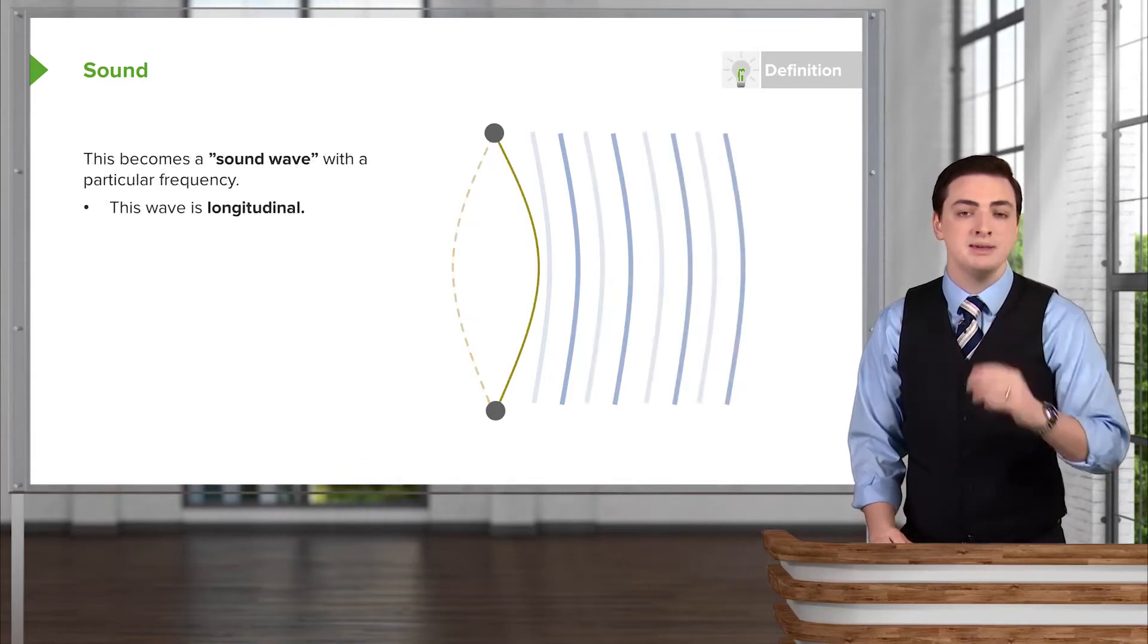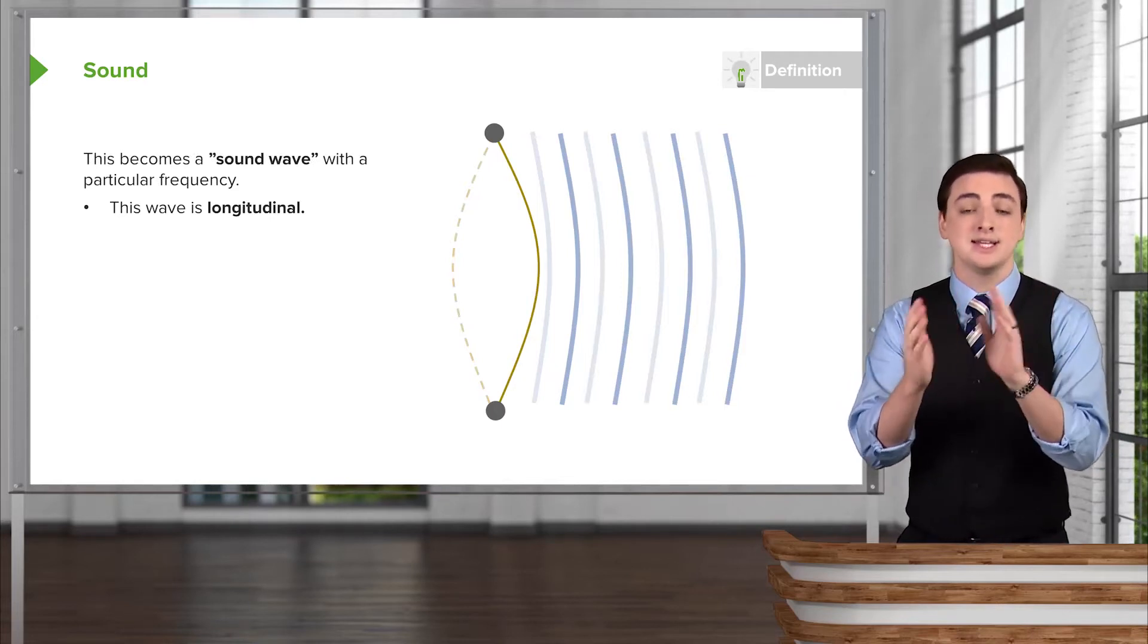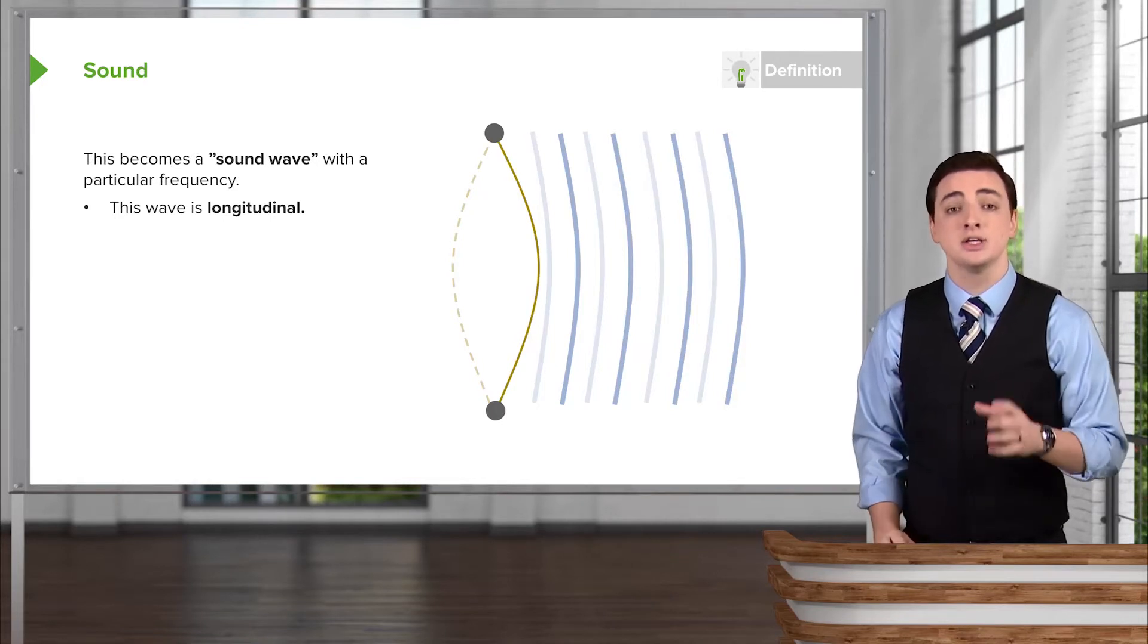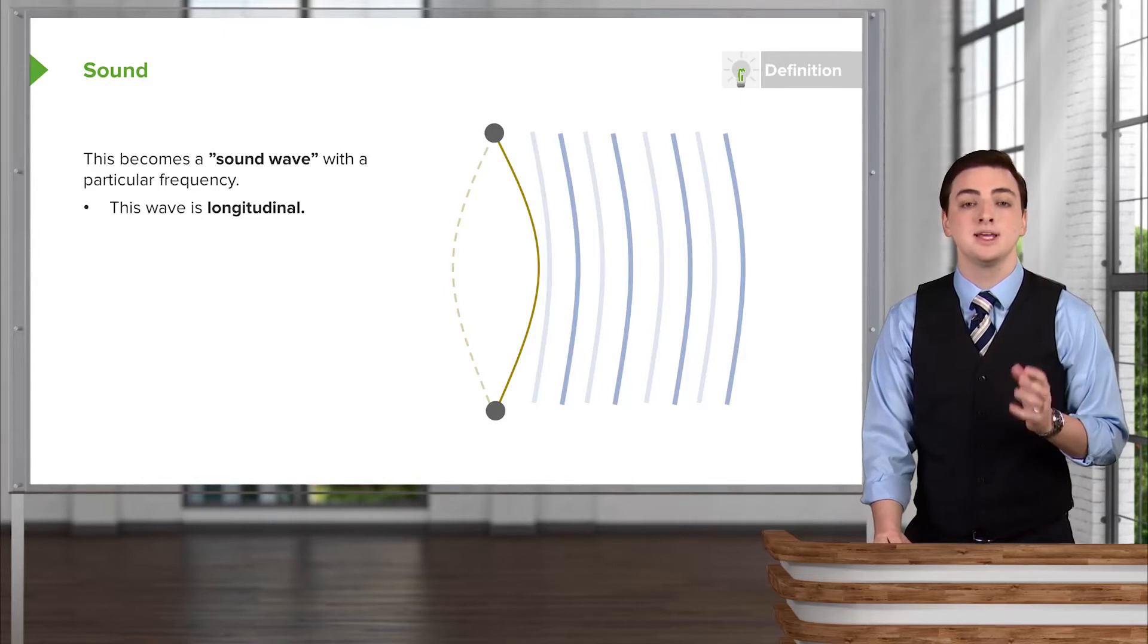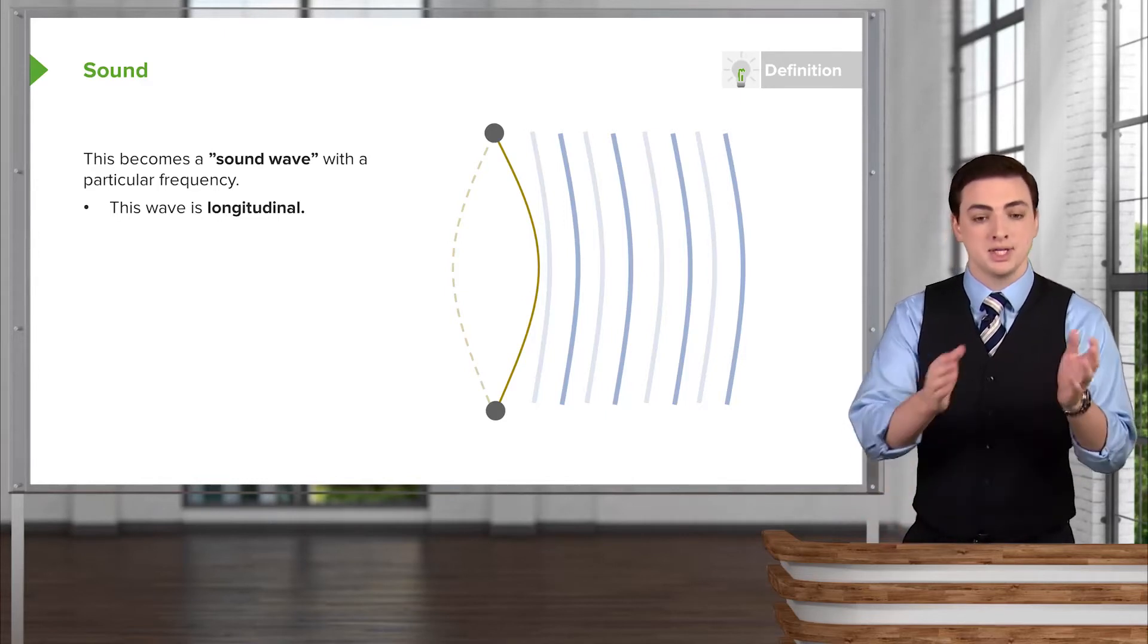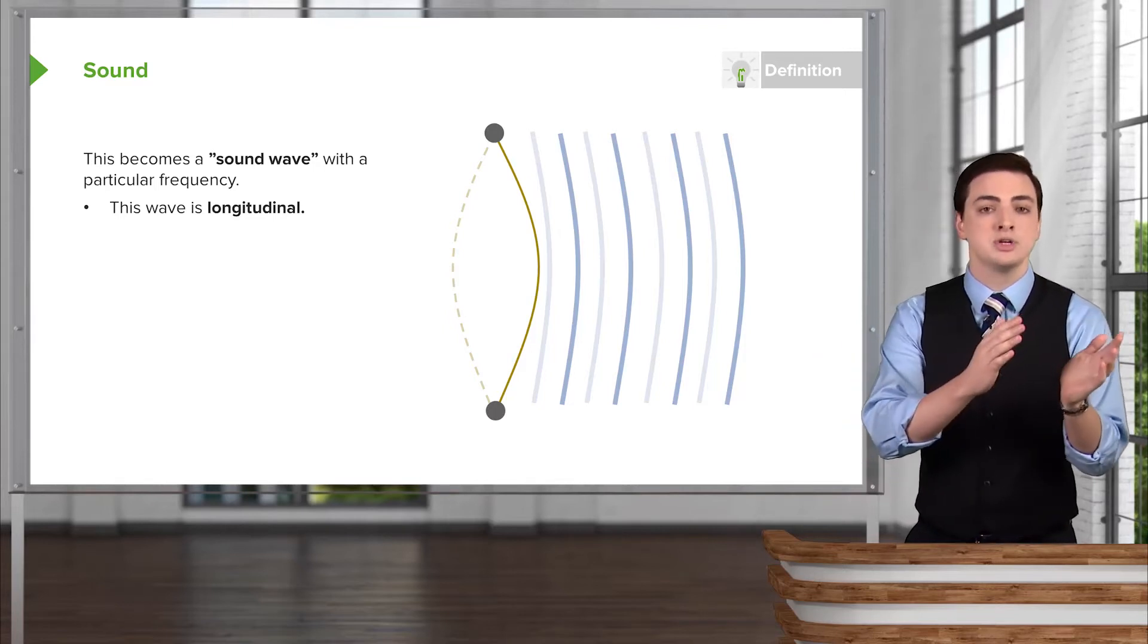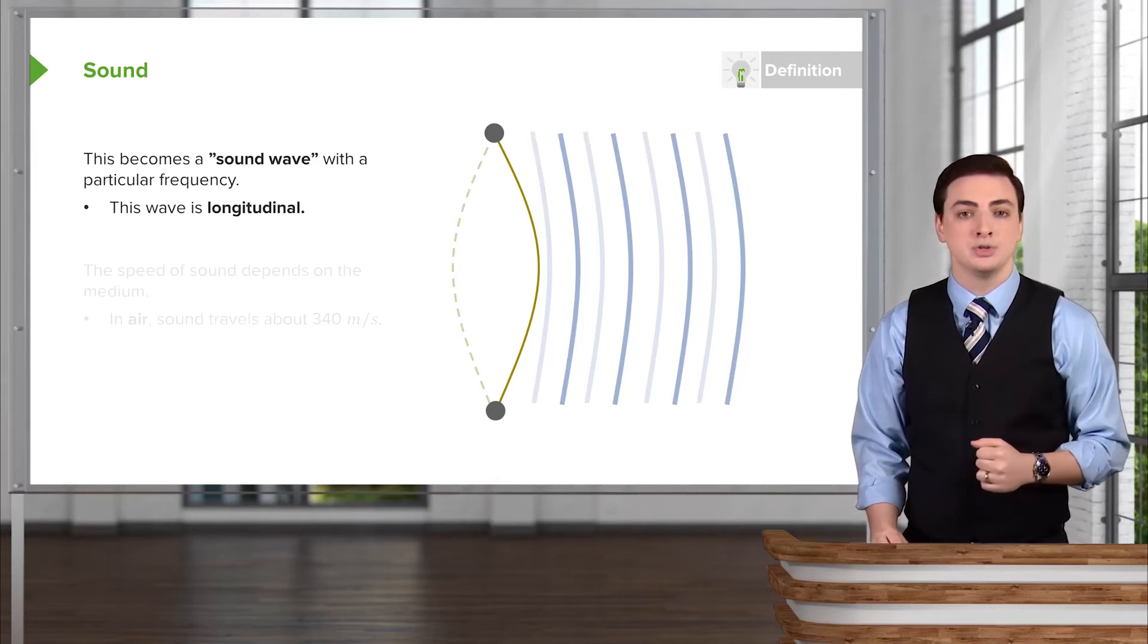As the string vibrates very quickly, it creates many compressions and rarefactions—these dense and less dense waves of air. Based on our definition of the two different types of waves, this is a longitudinal wave because the motion of the molecules is left and right and the motion of the wave is also left to right. Sound is a longitudinal wave.